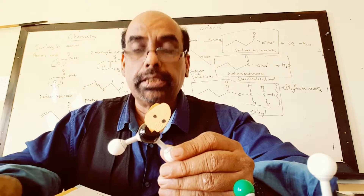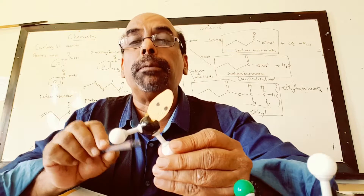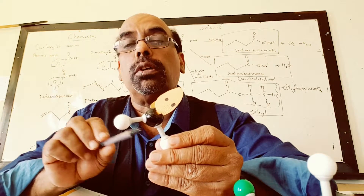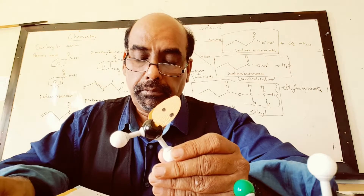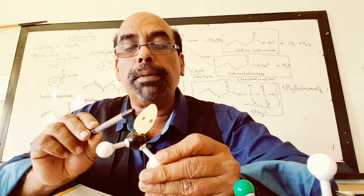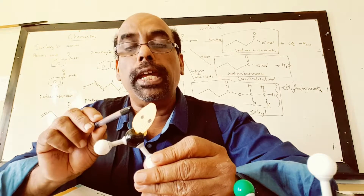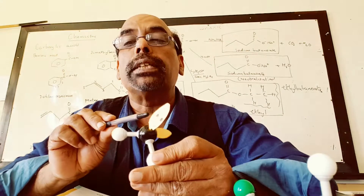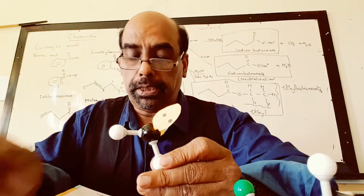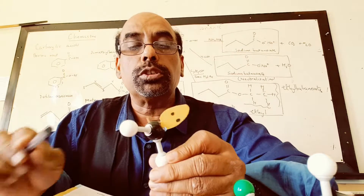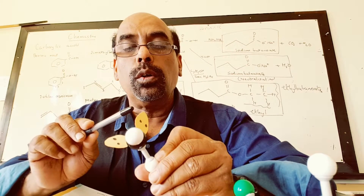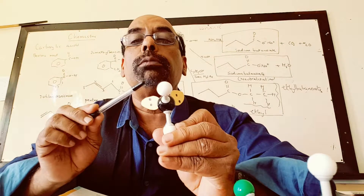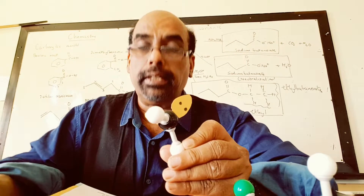There is bond pair–bond pair repulsion: the electrons between the two bonds repel each other. There is also bond pair–lone pair repulsion between the lone pairs of electrons and the bonded pairs. And there is lone pair–lone pair repulsion between the two lone pairs of electrons.